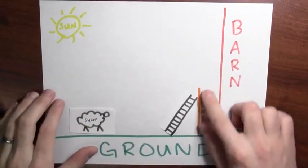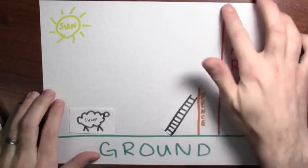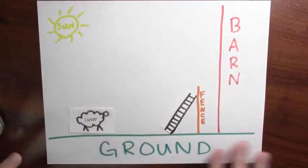I've got a sheep, I've got a fence, I've got a ladder. Here's a really tall barn. Here's the sun shining down on the ground. Let's suppose that you're the sheep stuck behind the fence, but eager to get to the barn.